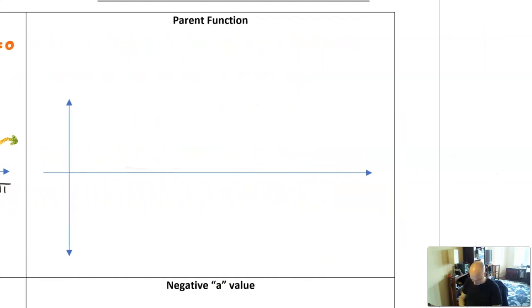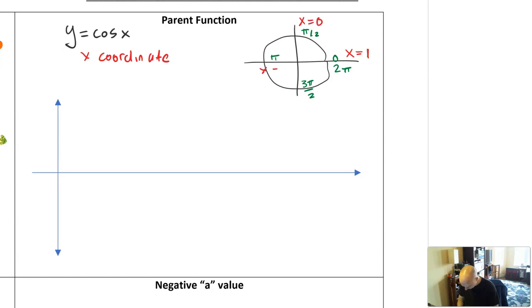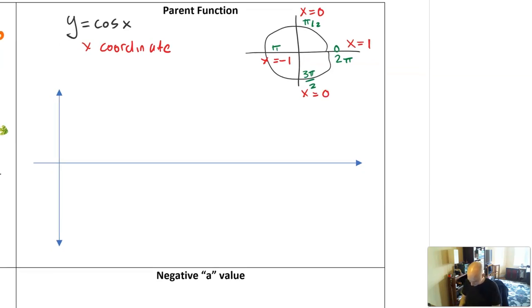Let's go and look at our parent function for cosine of x. Those are the angles and as I go around them, we're now going to label the x coordinate. x is now 1, 0, minus 1, and 0. So again, the values are between minus 1 and 1.